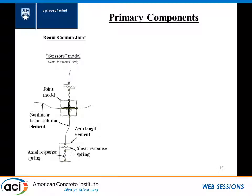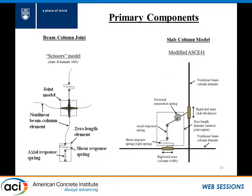For beam column frames, we need a good model for our joints. Dr. Lowes gave a great presentation on different models. We used what she called the simplest one — the scissors model — to represent the joint. The main important thing is the parameters for this model; we used what Dr. Hassan proposed. For slab column connections, the model is based on AC 41 and Dr. Kang's model. In addition to the torsional spring in AC 41, we also added an axial spring, so that whenever there is a slab column failure, there's no axial interaction between the slab and the column.